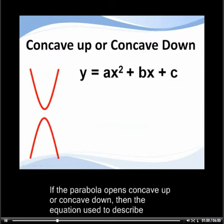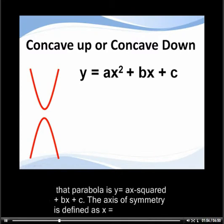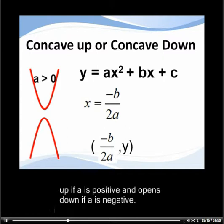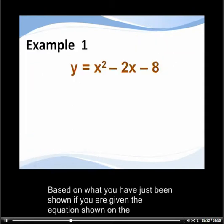If the parabola opens concave up or concave down, the equation used to describe it is y equals ax squared plus bx plus c. The axis of symmetry is defined as x equals minus b over 2a, and the x coordinate of the vertex is that same value, minus b over 2a. A parabola is concave up if a is positive, and opens down if a is negative.